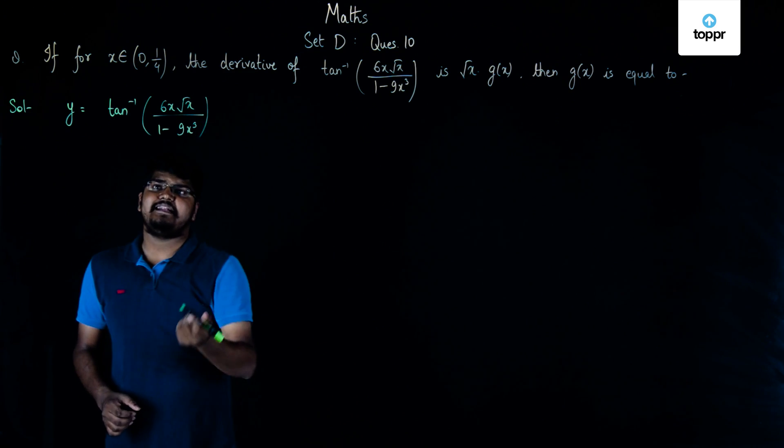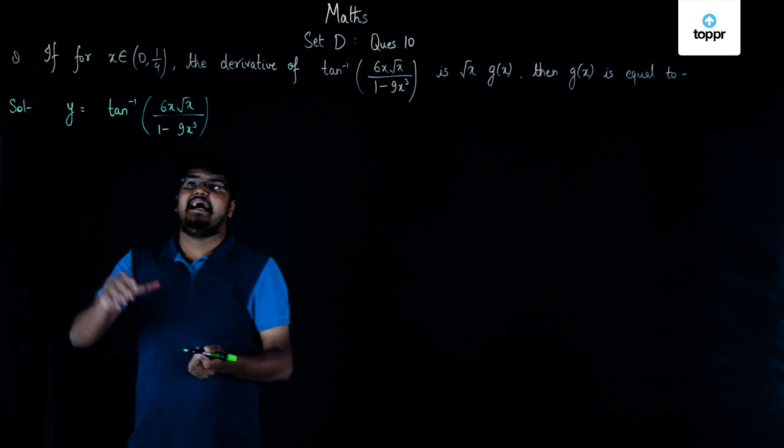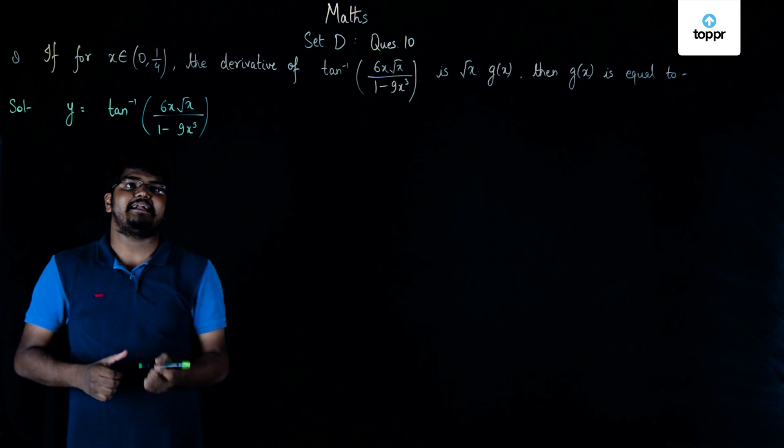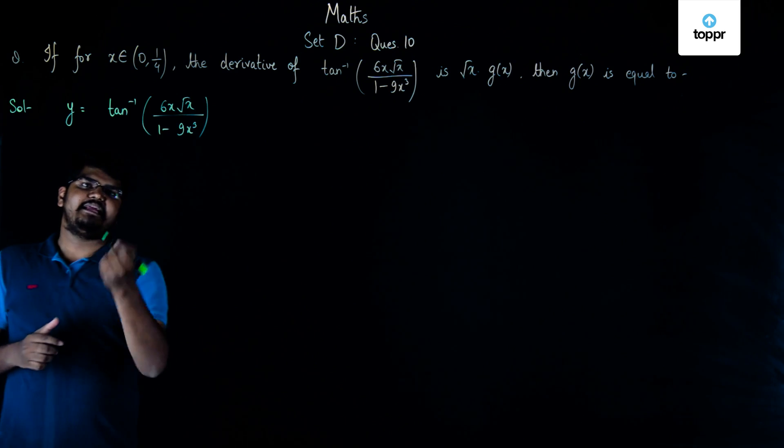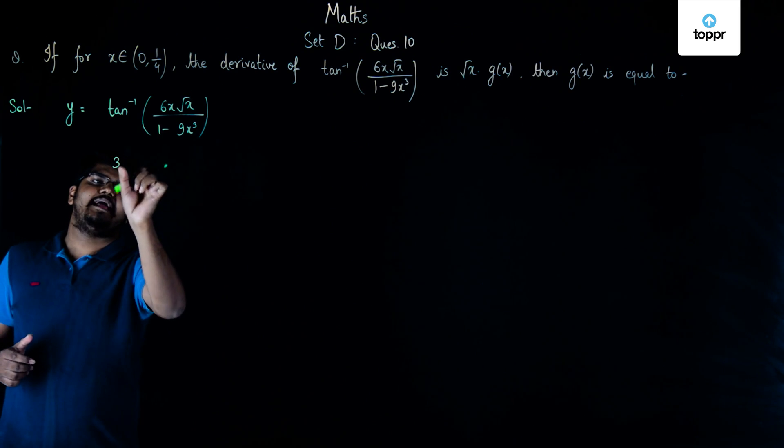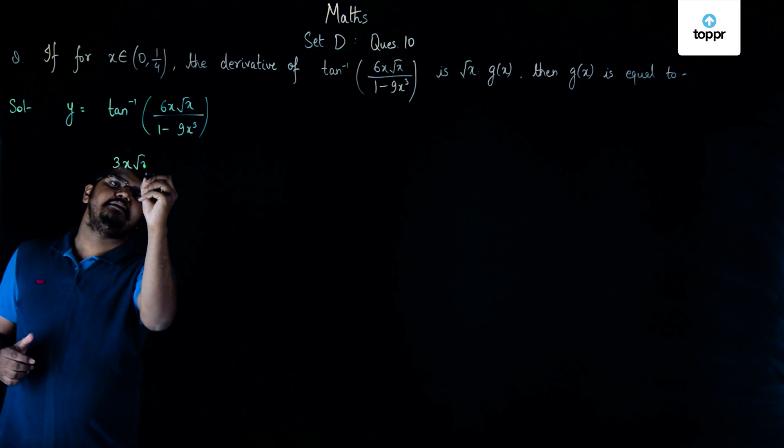Now we cannot directly find the derivative as it will be quite difficult. So instead of finding its derivative directly, let's do something else. Let's put 3x√x as tan θ.